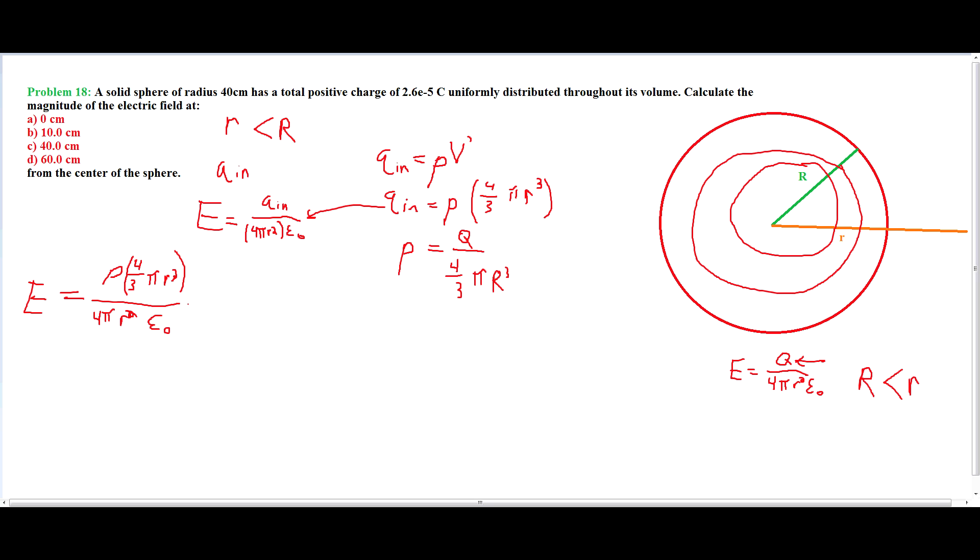divided by 4 pi r squared times the permittivity of free space. And then, we take out the r's, so there's only one r on top, pi's are gone, four's are gone. So what we end up with is rho r divided by 3 times the permittivity of free space. And then, we know that this is equal to 1 divided by 4 pi ke.